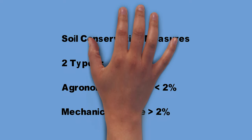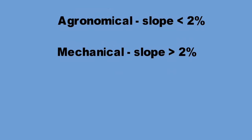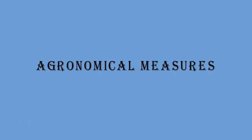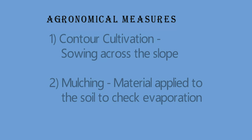The next topic is soil conservation measures. The two types are agronomical and mechanical measures. Agronomical measures are adopted when the slope is less than two percent, and mechanical measures when the slope is greater than two percent. Agronomical measures are of three types: contour cultivation, which involves sowing across the slope to conserve soil fertility and water; mulching, where material is applied on the soil surface — such as leaves and manure — to check evaporation and improve soil water.